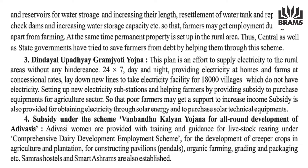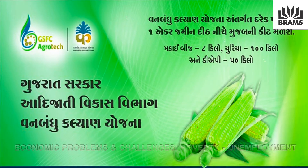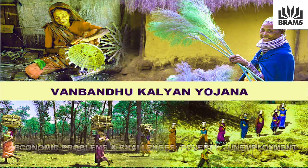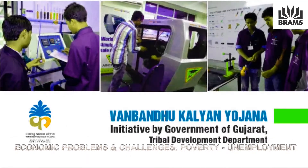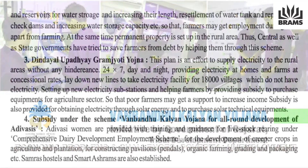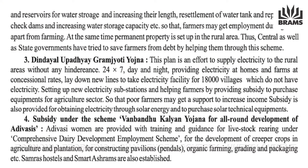For the agriculture sector's development in the market, subsidies are provided under various schemes. The Van Bandhu Kalyan Yojana aims at all-round development of Adivasis. Adivasi women are provided with training and guidance for livestock rearing under the comprehensive dairy development employment scheme. Development of creeper crops in agriculture and plantation, constructing pavilions called Pandals, organic farming, grading and packaging are also included. Summers hotels and smart ashrams are also established, enabling women to be trained in organic farming, packaging, and building Pandals.